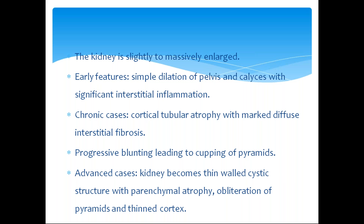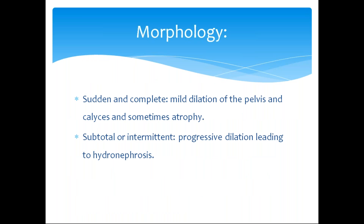Cortical tubular atrophy leads to decreasing concentrating ability of the kidneys, leading to progressive blunting and cupping of the pyramids. In subtotal or intermittent obstruction, this is a chronic course — the kidney is slightly to massively enlarged. Features include simple dilation of the pelvis and calyces with significant interstitial inflammation, and in chronic cases, cortical tubular atrophy with marked interstitial fibrosis. All of these changes can be seen in subtotal or intermittent obstruction.